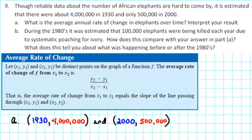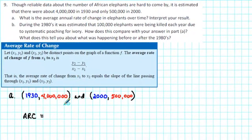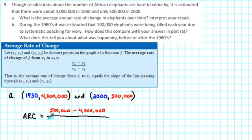To find the average rate of change, the first thing that we do is find the change in the number of elephants over time. So, we take the ending number of elephants, 500,000, and subtract the initial number of elephants, 4 million. And then we divide that by the change in time. So, the ending year was 2000, and we take away the initial year, which was 1930.